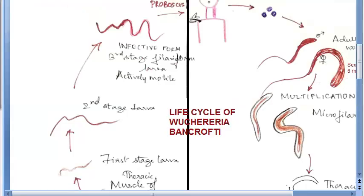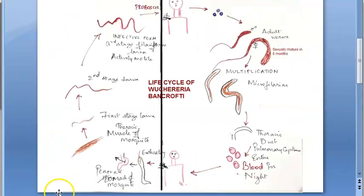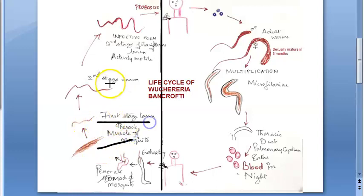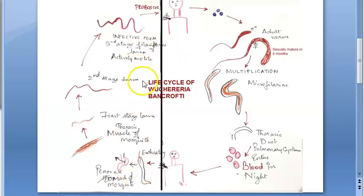Once it has reached the thoracic muscle of the mosquito, it develops: first stage larva, second stage larva, then third stage infective filariform larva. It becomes the infective form again in the mosquito — actively motile, third stage filariform larva — which is the infective form for man. After this the entire cycle continues.